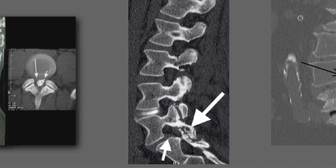This demonstrates a CT scan — actually a post-discogram, as you can see the dye within the disc — but it's great to look at bony architecture. Here on the x-ray you can see perfect degenerative changes: erosion of the end plate, cyst formation, thinning, and spur formation. Sometimes CTs are more valuable than MRIs.